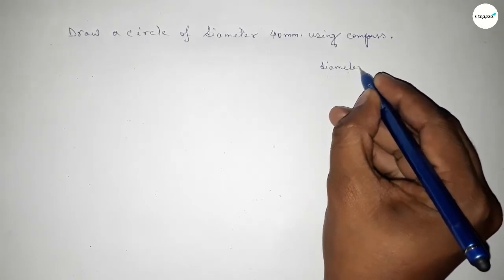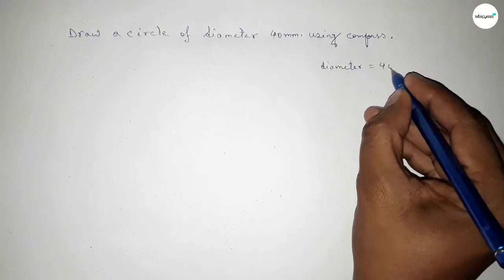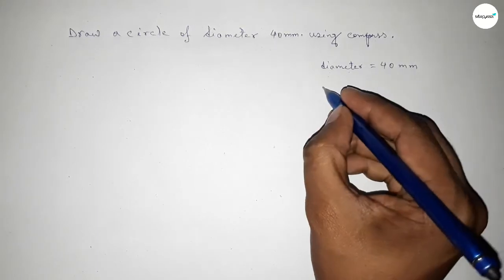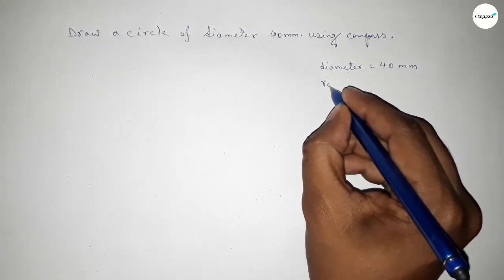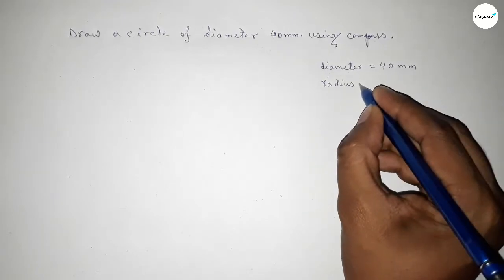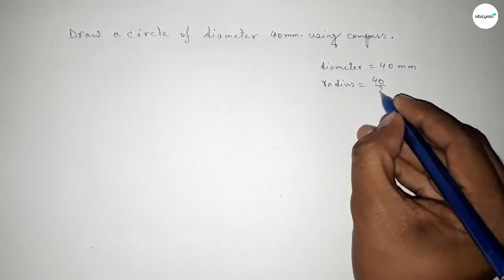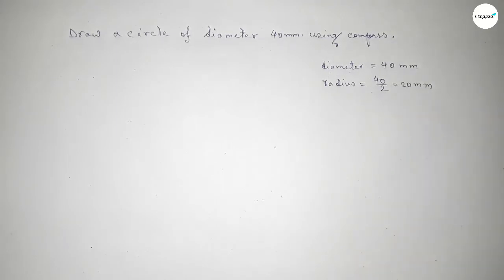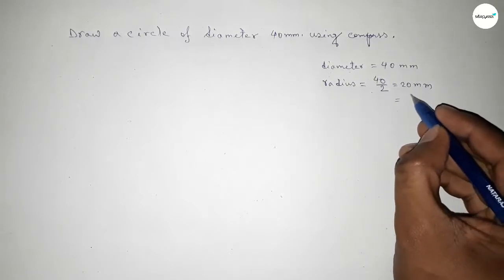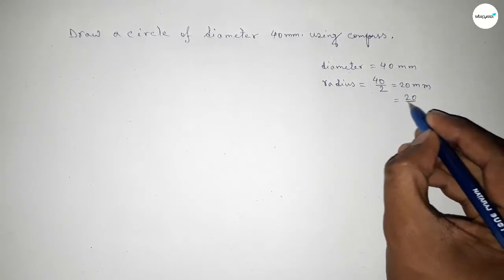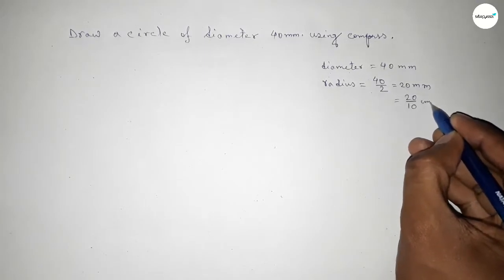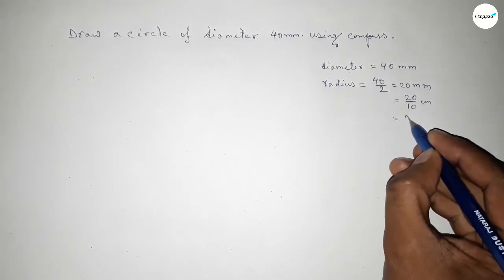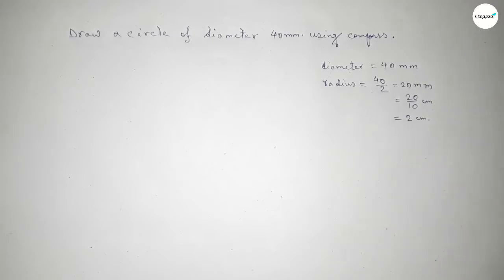First, finding the radius. If you divide the diameter by 2, then we can get the radius. So dividing by 2, this is 20mm. Now we have to convert millimeter to centimeter, then we have to divide by 10. So this is 2cm.